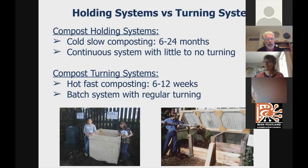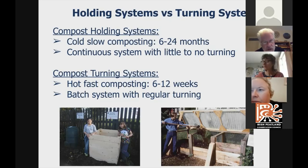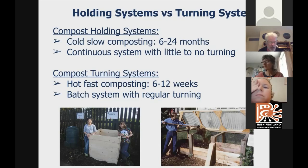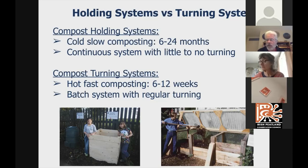The difference between holding and turning systems is that holding systems are a cold and slow, continuous process where we add materials to the bin as we generate them in the garden. Turning systems are hotter and faster — we can make compost in six to twelve weeks versus six to twenty-four months. With turning systems, we make a big batch all at once, like baking a cake — mix the ingredients, put them in, and within eight to twelve weeks we get a finished compost product.